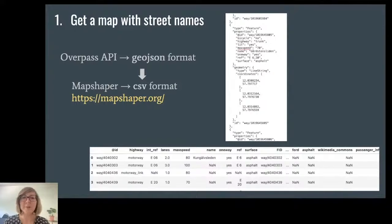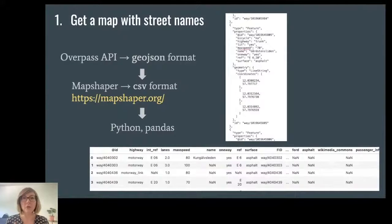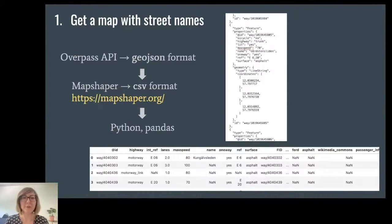I did the cleanup of the data in Python with the pandas library, which is a really good library for data analysis and data manipulation, especially for CSV and JSON formats. I filtered for unique street names so I would get only one row per street, resulting in a much smaller file with about 6,000 rows. I also removed almost all of the 250 columns that I didn't need.